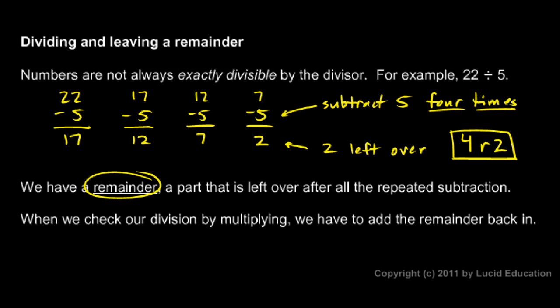And that remainder is the part that's left over after repeated subtraction. Now, earlier, we were checking our division by multiplying and we can do that here. But we have to add the remainder back in. So, in this case, we take our 4 and we multiply it by the 5.